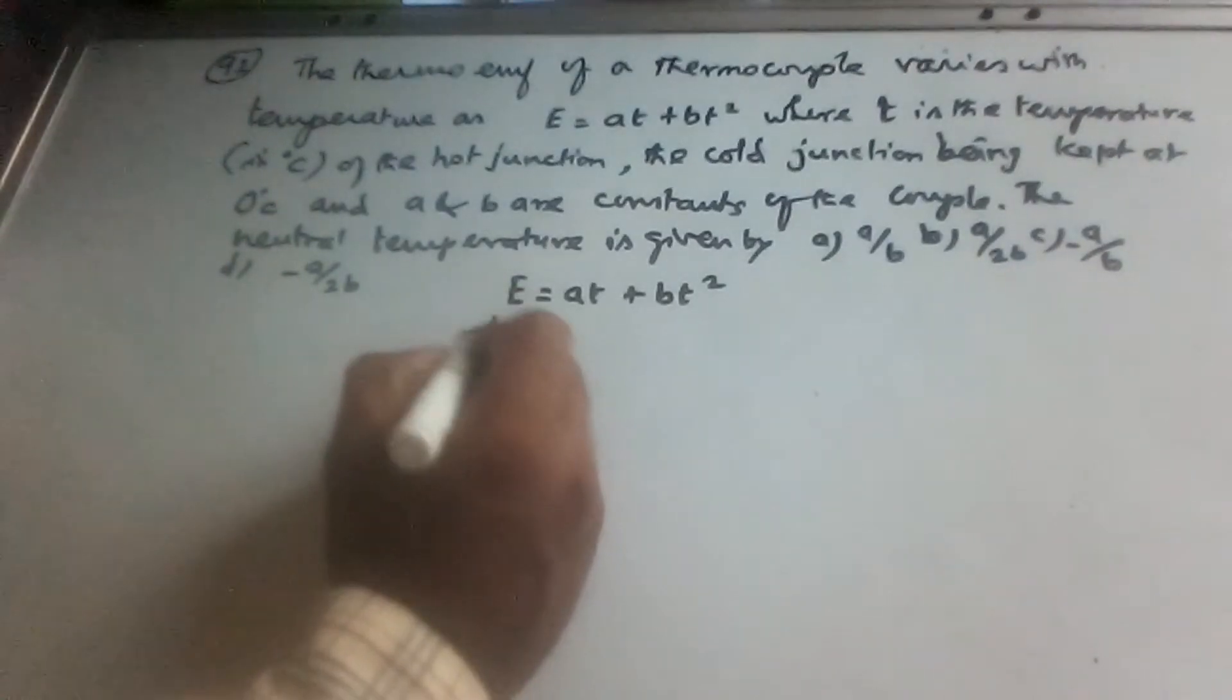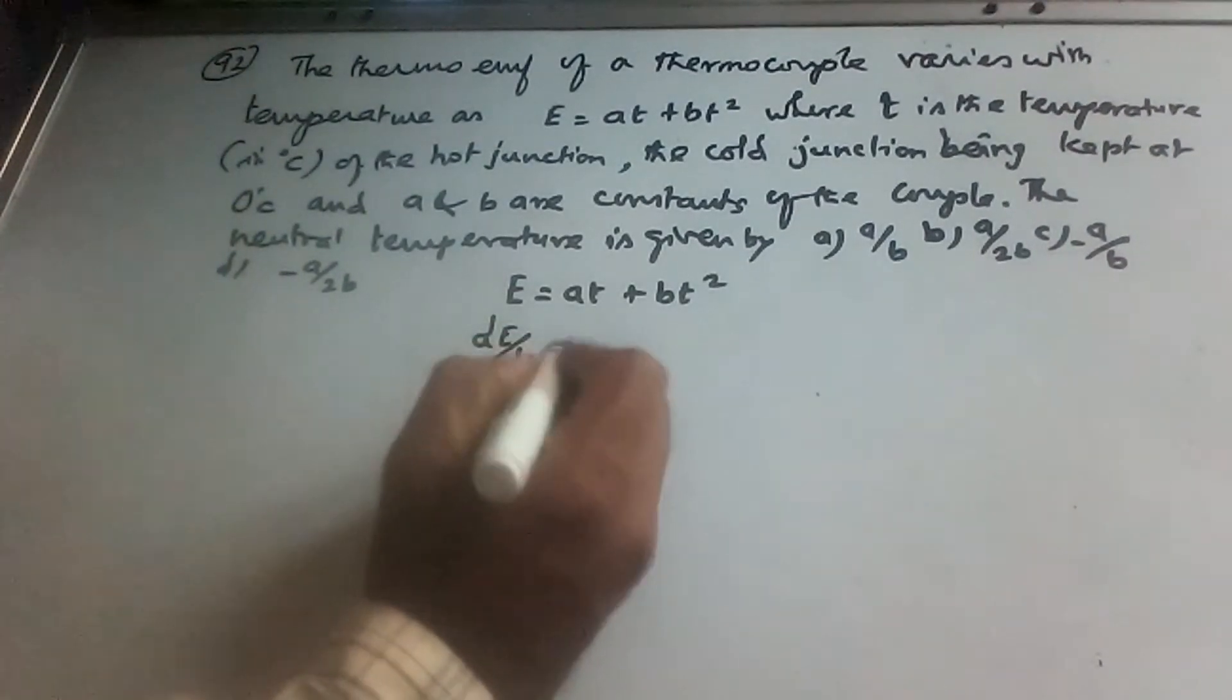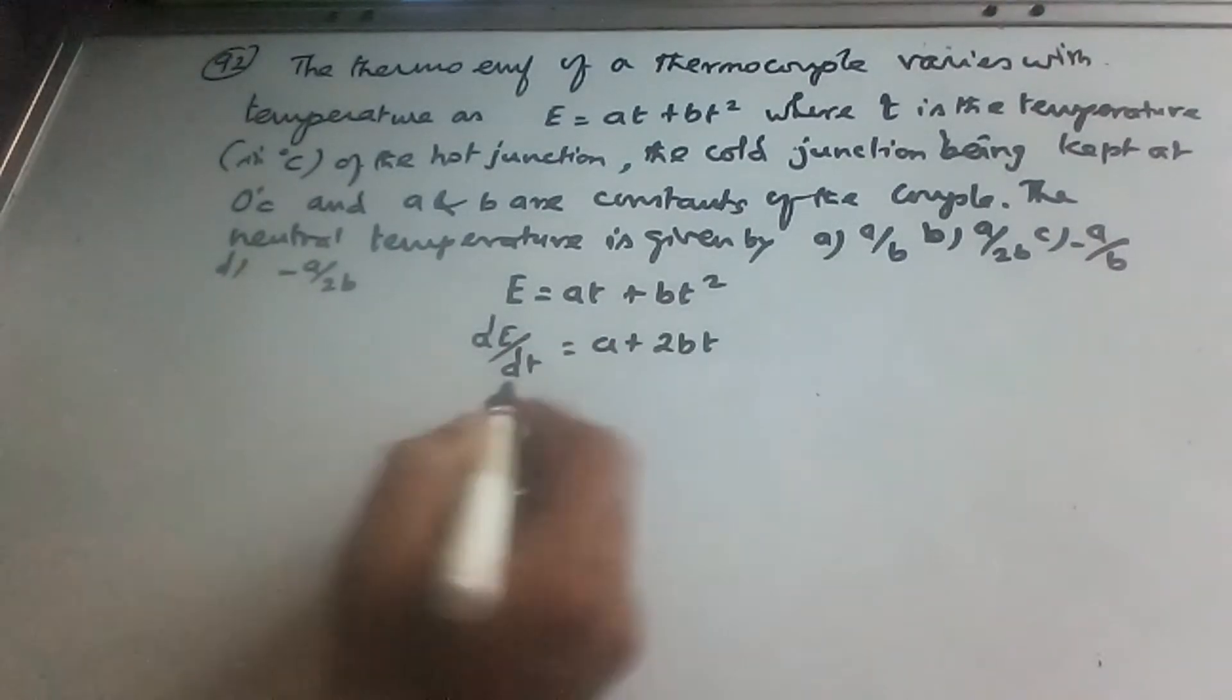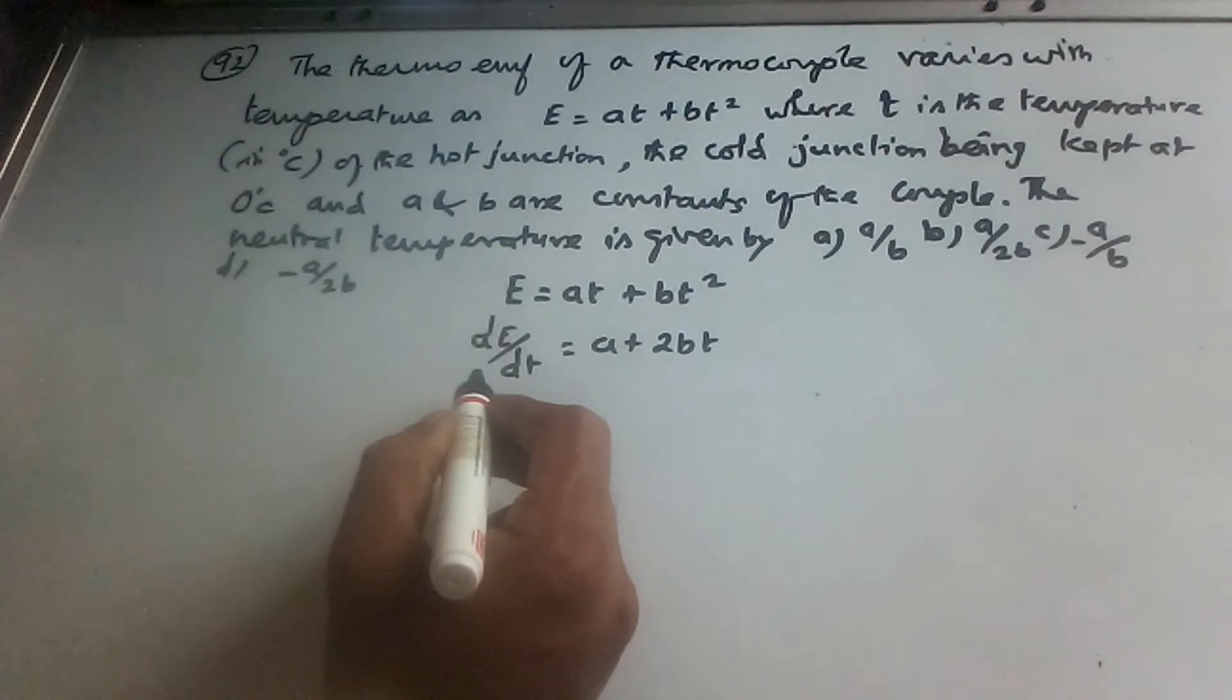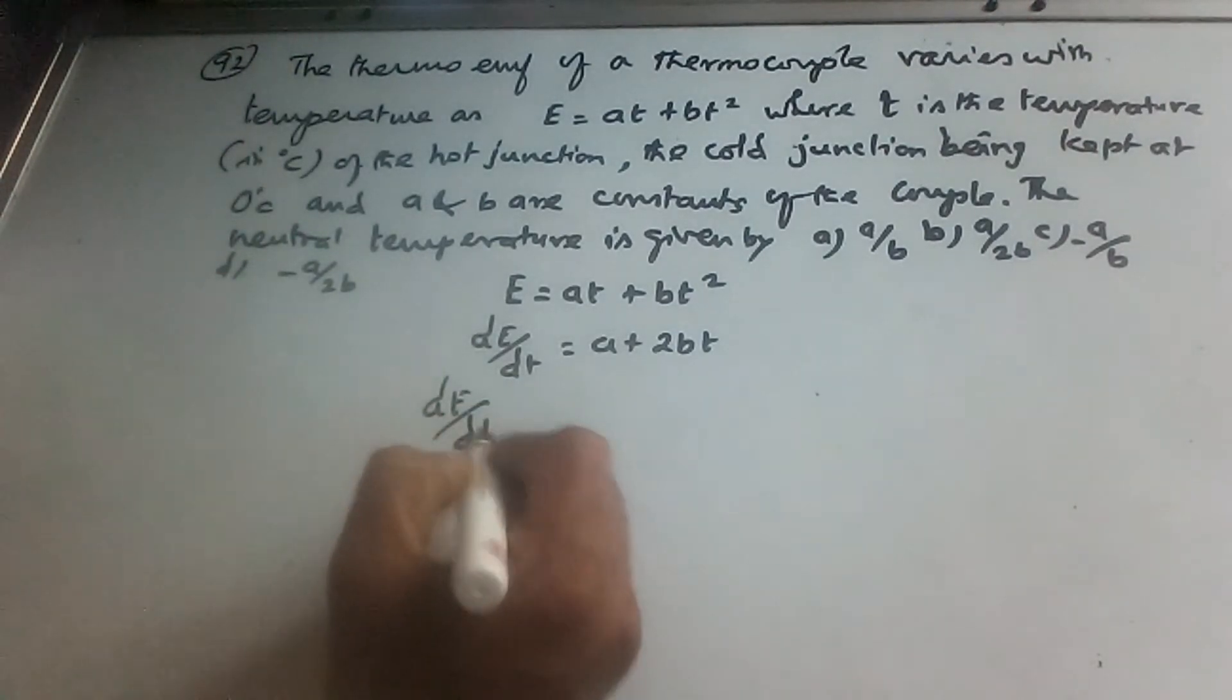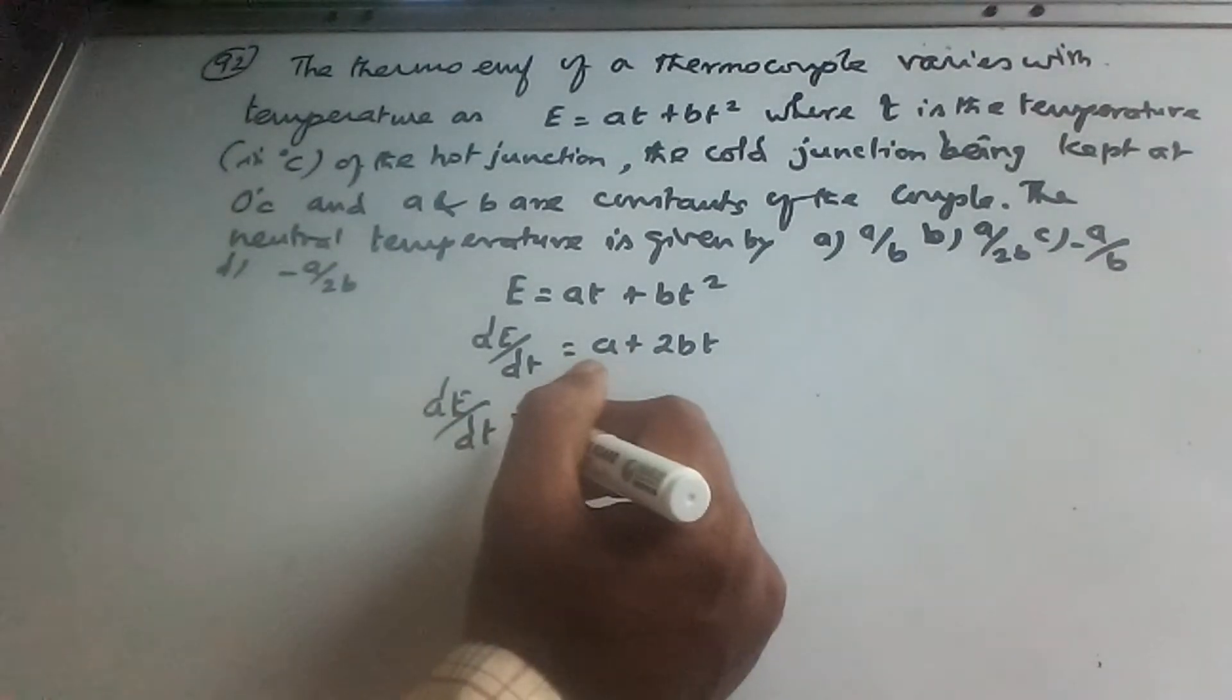So dE by dT is A plus 2BT. Now, at neutral temperature, dE by dT is equal to 0.